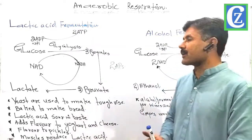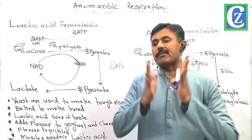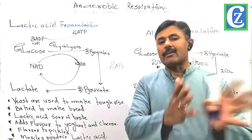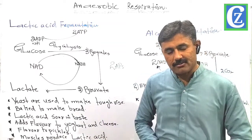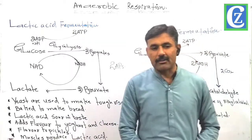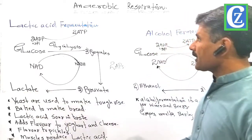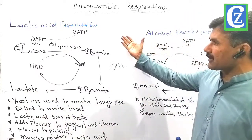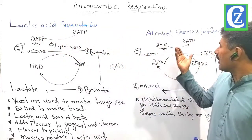The aerobic breakdown of pyruvates is another story that we will be talking about in the next class, where we convert pyruvates into acetyl coenzyme, and acetyl coenzyme enters into the Krebs cycle. This converts pyruvates into carbon dioxide and water and produces a sufficient amount of ATP. So what is anaerobic respiration? We have two types: lactic acid fermentation and ethyl alcohol fermentation.